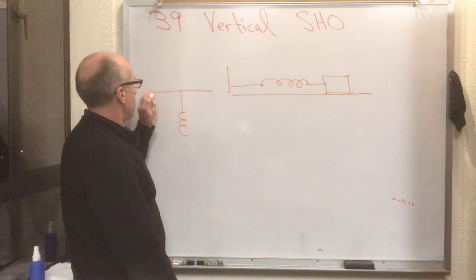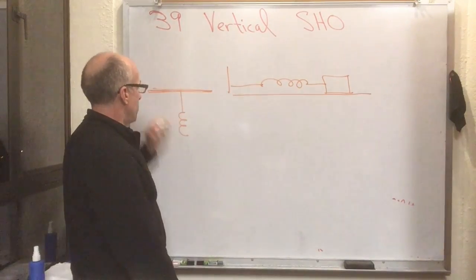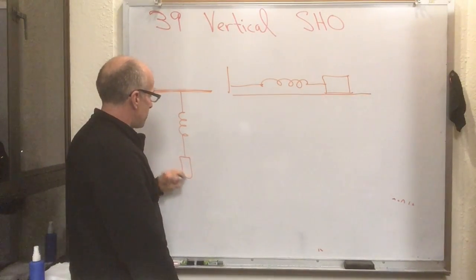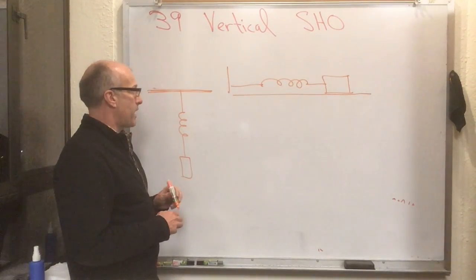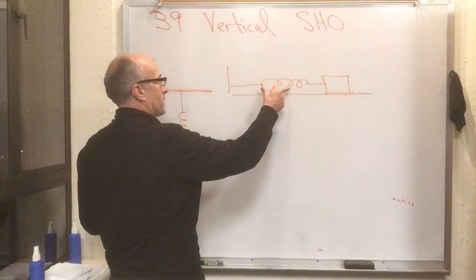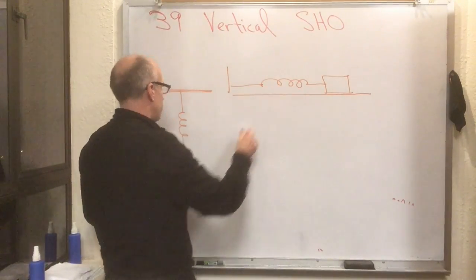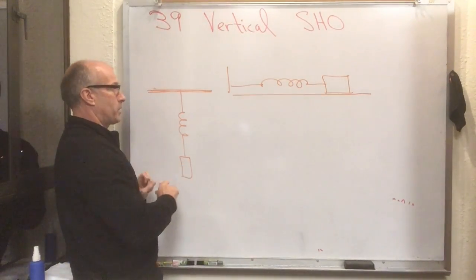The more common case is if you have the spring hanging from some fixed rod and then the mass is hanging off the spring. So that's actually the more common situation, and it isn't obvious that this situation has the same types of solutions as this situation. So that's what this section is about.